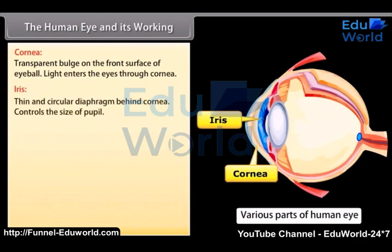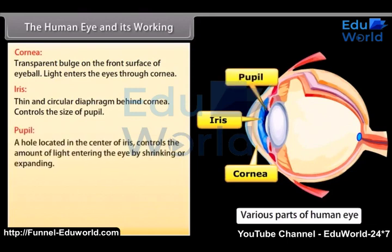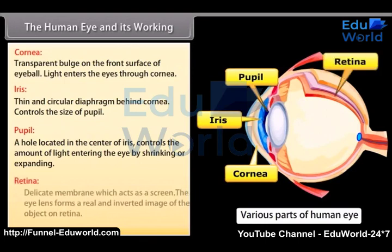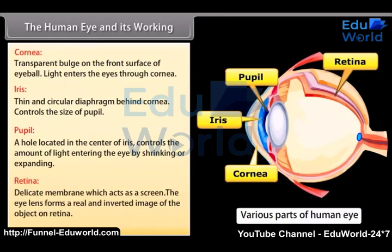Iris — it is a thin and circular diaphragm behind the cornea which controls the size of the pupil. Pupil — it is a hole in the center of the iris that appears black and controls the amount of light entering the eye by shrinking or expanding. Retina — it is a delicate membrane which acts as a screen. The eye lens forms a real and inverted image of the object on the retina.